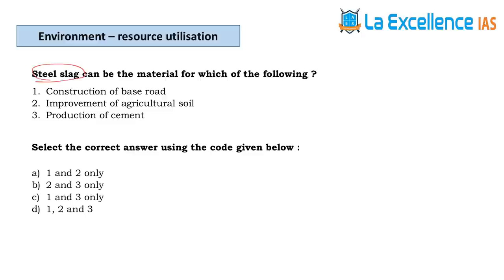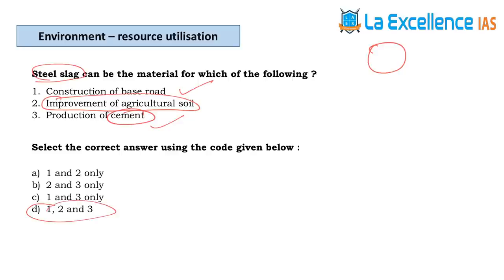The next question is about steel slag. In circular economy we utilize waste resources — steel slag is used in road construction and in production of bricks and cement. For improving agricultural soil, steel slag corrects soil acidity. Answer is D. Steel slag is a byproduct of steel making — when molten steel is separated from impurities, the liquid byproduct is steel slag.